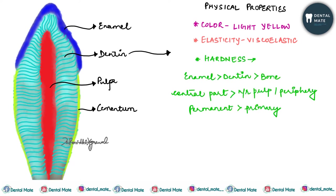Regarding hardness, among the hard tissues enamel is the hardest, then comes dentine, and after that bone. As for dentine itself, it is harder in the central part compared to the dentine near the pulp or periphery. Additionally, the dentine of the permanent tooth is harder compared to that of the primary tooth.